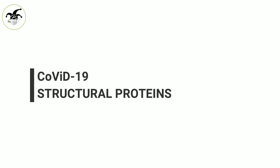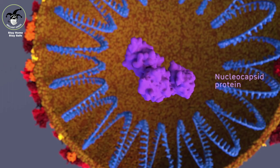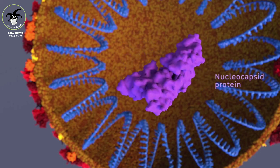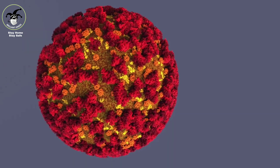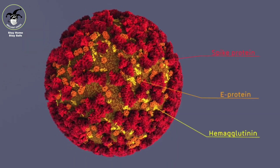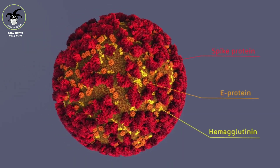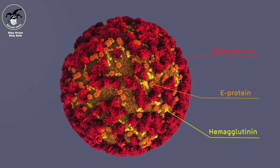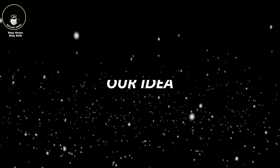The COVID-19 structural proteins — what are the proteins present in COVID-19? Nucleocapsid protein, E protein, N protein, M protein, S protein called spike protein, and hemagglutinin.